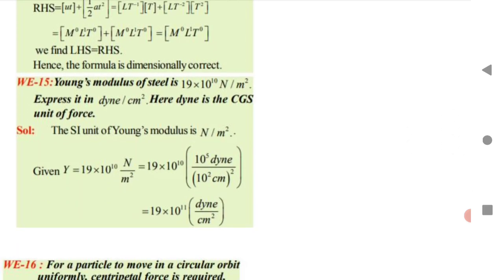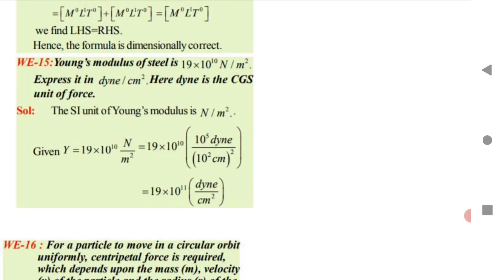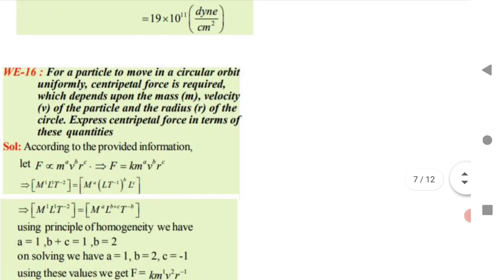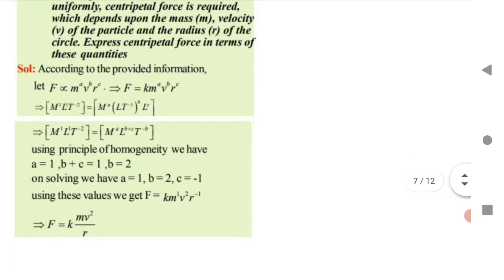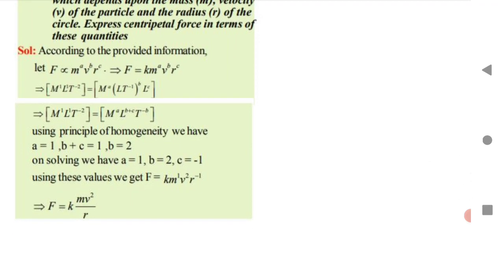Young's modulus of steel is given in SI units (N/m²); express it in CGS units (dyn/cm²). Since 1 N = 10⁵ dyn and 1 m² = 10⁴ cm², substitute and simplify to get the answer. For centrifugal force depending on mass m, velocity v, and radius r: F ∝ m^a × v^b × r^c. Use dimensional analysis to find a, b, and c.